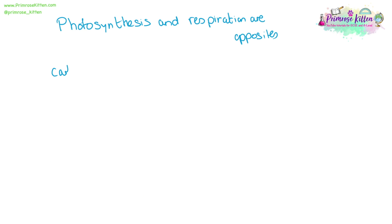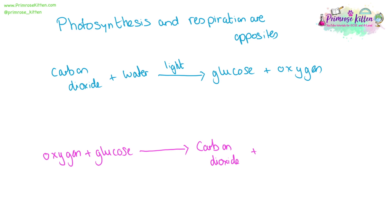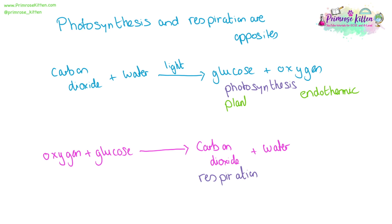Photosynthesis and respiration are opposites — it can be easy to confuse them. The equation for photosynthesis is: carbon dioxide plus water turns into glucose plus oxygen. Whereas for respiration, glucose plus oxygen turns into carbon dioxide plus water. Photosynthesis occurs in plants during the day when sunlight is present. Respiration also occurs in plants — it generally happens during the night when there is no photosynthesis. It also occurs in animals; that is how we get our energy.